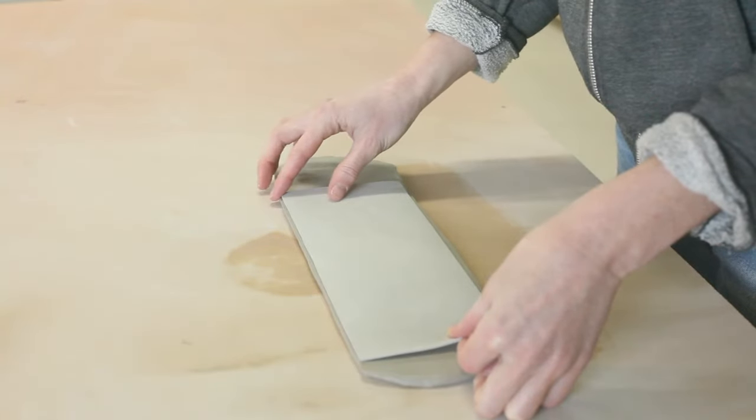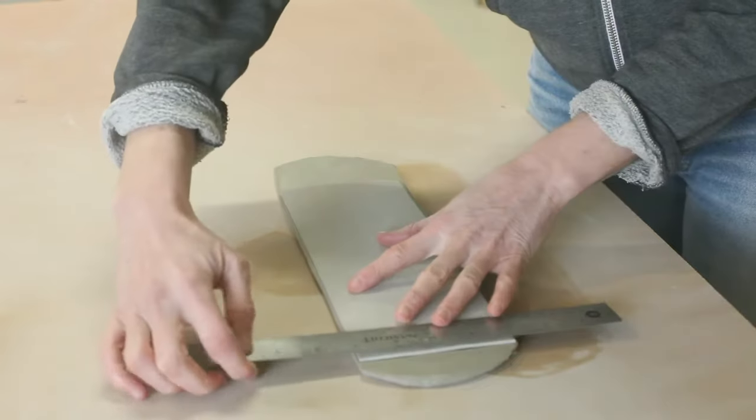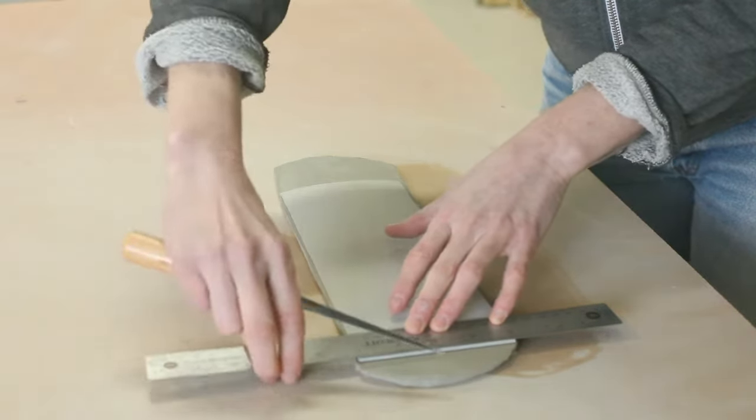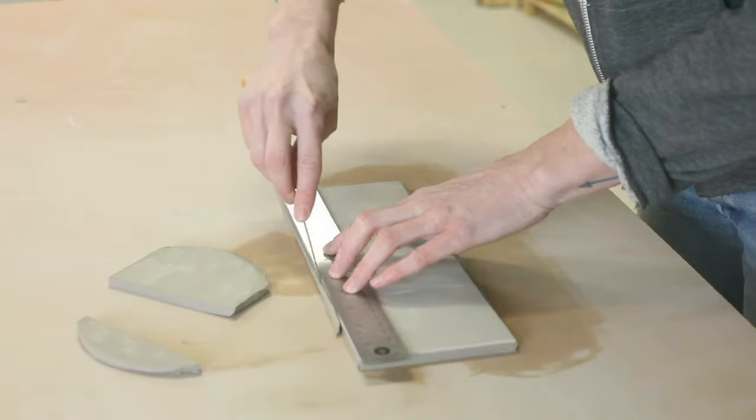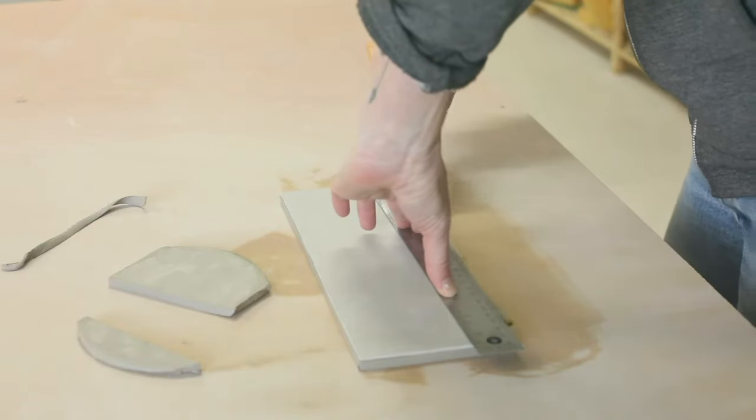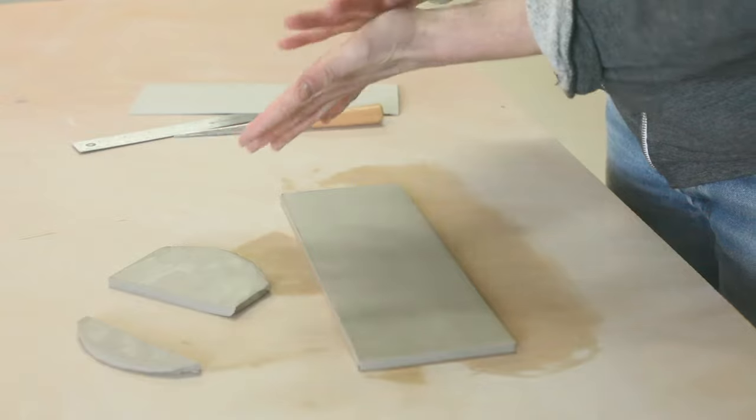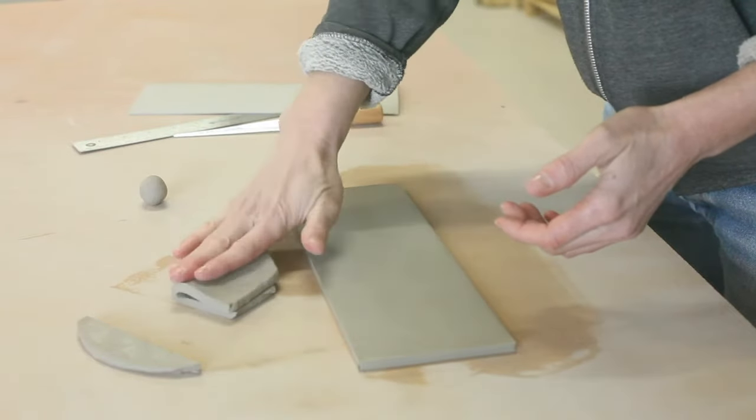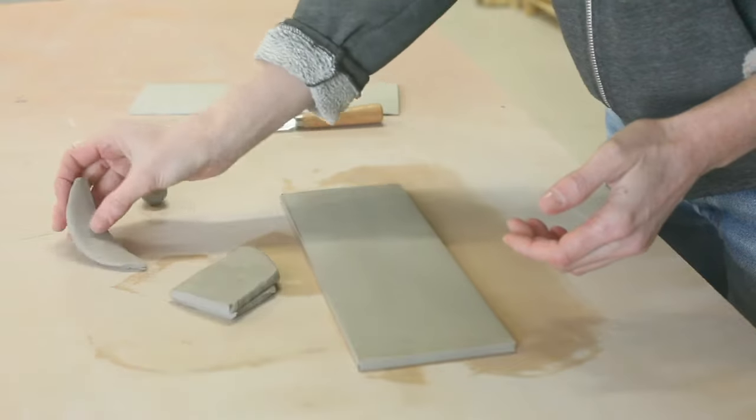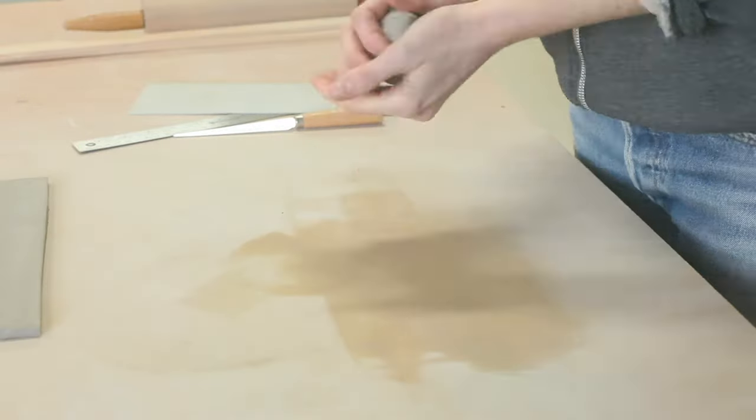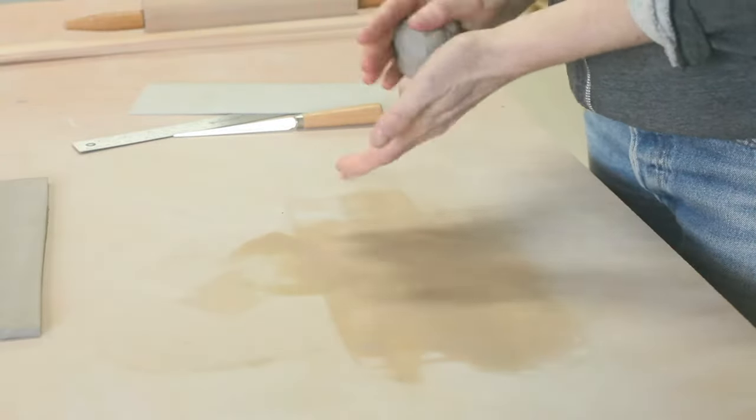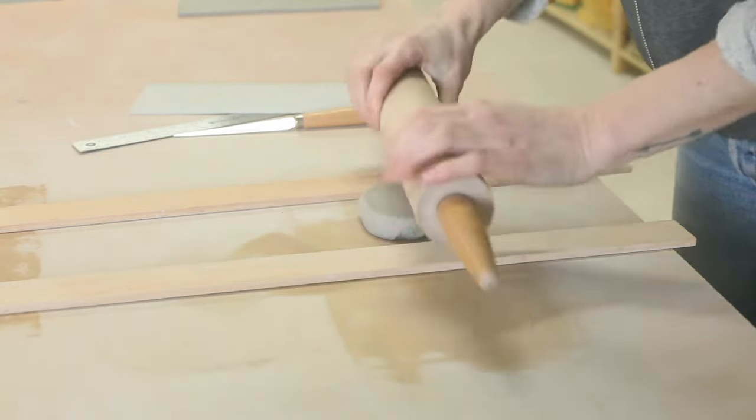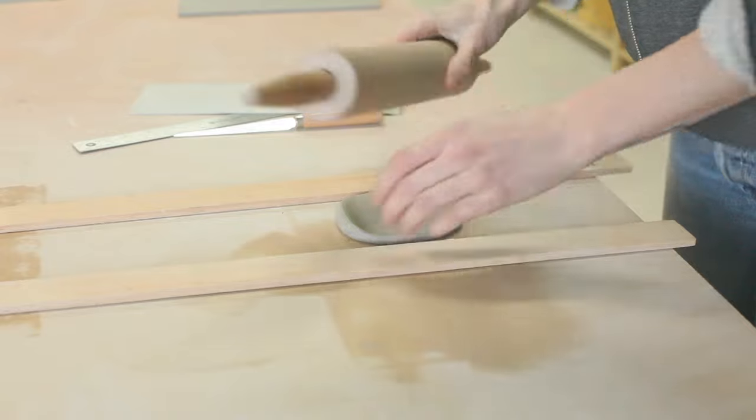To cut out my piece I'll lay the template on top with a straight edge to cut against. Make sure to keep the knife straight up and down. These cut off pieces can be used for the bottom of the project.